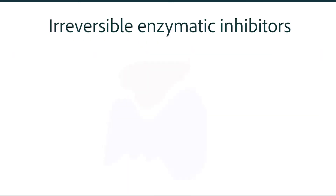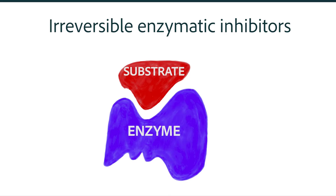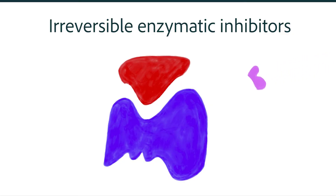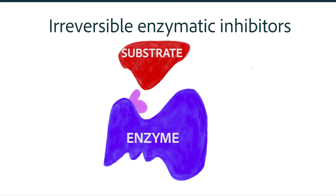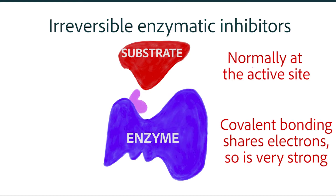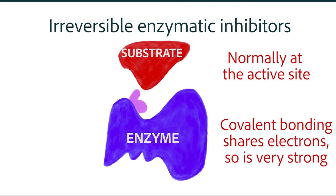Now let's talk about irreversible inhibitors. If a person is given an irreversible inhibitor of an enzyme, the enzyme can no longer perform its function. An irreversible inhibitor inactivates an enzyme by binding — normally covalently — to the enzyme, and normally at the active site. The irreversible enzymatic inhibitors are time-dependent, so eventually the medication will be degraded at the active site or the enzyme will be replaced. This often takes much longer than the half-life of the medication would predict.